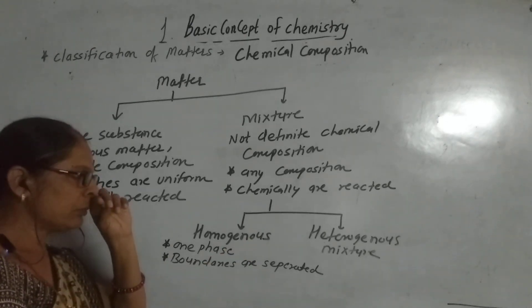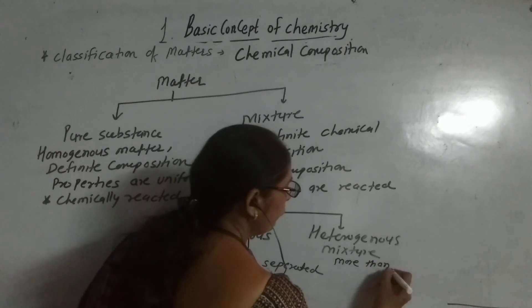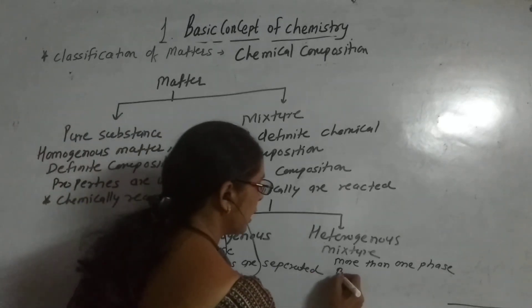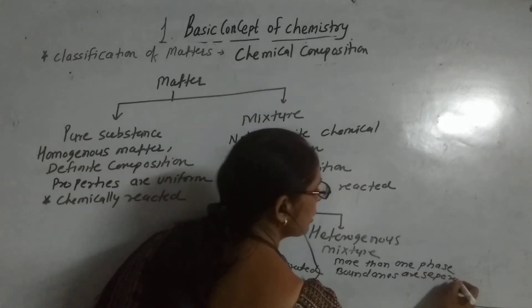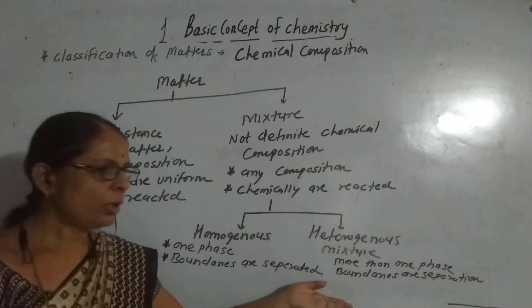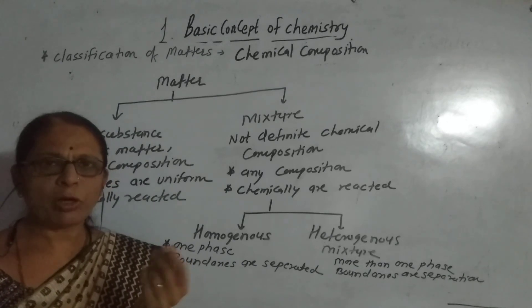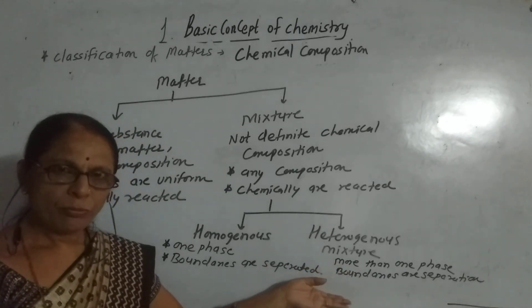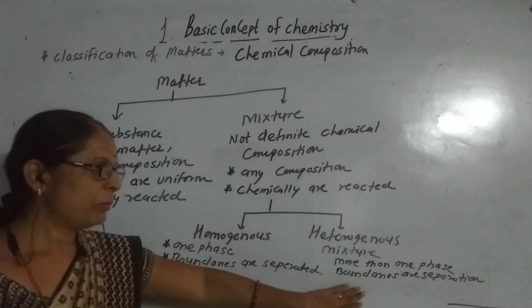When I consider a heterogeneous mixture, the components are present in more than one phase. As they are present in more than one phase, their boundaries can be separated. As the boundaries are separated, we can observe this separation either by the naked eye or under the microscope. For example, paint, oil in water, or muddy water — the particles of mud and water you can observe. Chalk in water or oil in water are also examples.